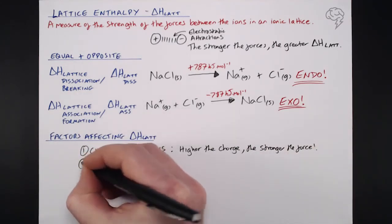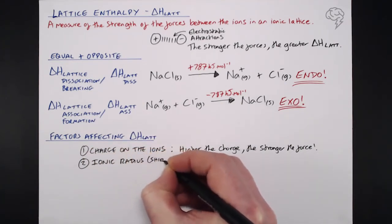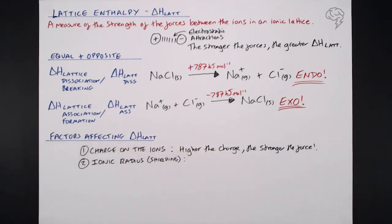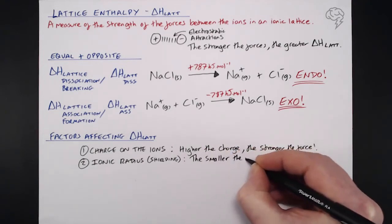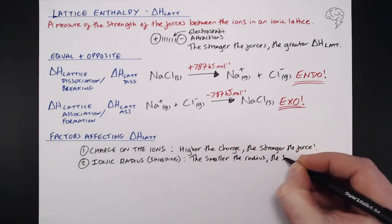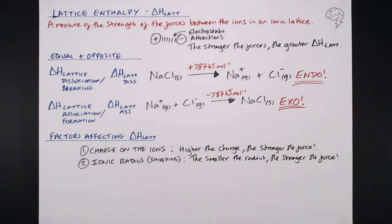But there's something else, the ionic radius. Because the charge on the ions is affected by the size of the ion itself as well. And of course, shielding, especially when it comes to positive ions. The more shielding, the less the effective charge. So what I mean here is the smaller the radius, the stronger the force. So it's the combination of these two things that actually dictate the size of the lattice enthalpy.